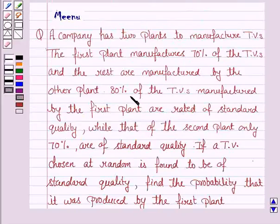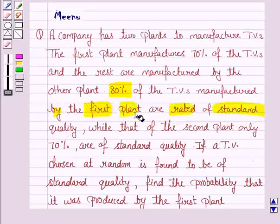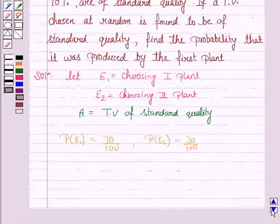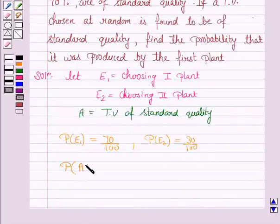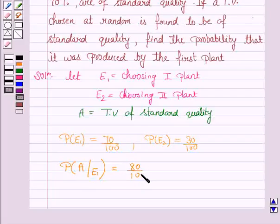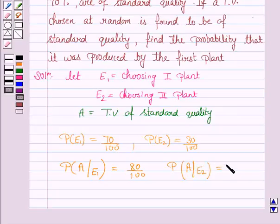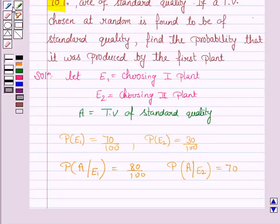We are given that 80% of the TVs from the first plant are of standard quality. So the probability of a TV being of standard quality given it comes from plant 1, P(A|E1), is 80% — that is 80/100. And the probability of a TV being of standard quality given it comes from plant 2, P(A|E2), is 70% — that is 70/100.